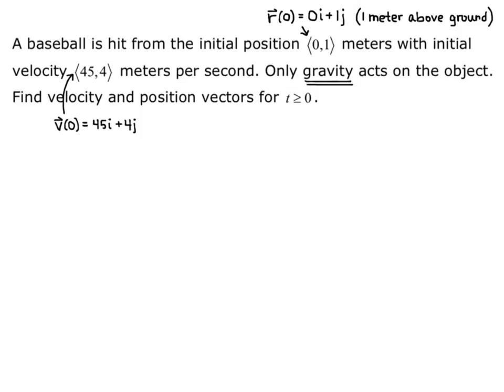The third thing we're told is only gravity acts on the object. Gravity is our acceleration, so a(t) = 0i − 9.8j. Any time we're dealing with meters and seconds, gravity is 9.8 and it's pushing down, so it's minus 9.8 in the y or j direction.